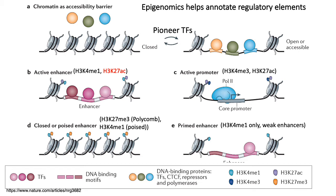Most of the histone modifications discussed in this lecture are on the H3 histone, so the H3 will often be dropped from names since they get pretty long. Part B illustrates that active enhancers are generally marked by K4 monomethylation as well as K27 acetylation, and those regions are associated with activating transcription factors. Active promoters are typically defined by histone marks like K4 trimethylation and K27 acetylation, with the key difference being that RNA Pol II also binds at promoter sites.